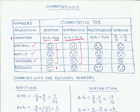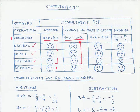In essence, all four number types — natural numbers, whole numbers, integers, and rational numbers — do not follow the commutative property under the operation of subtraction.